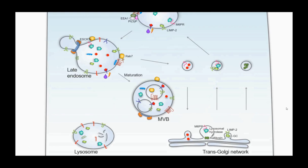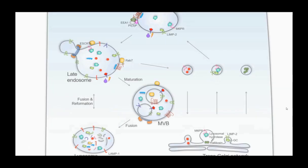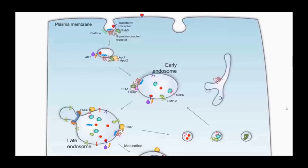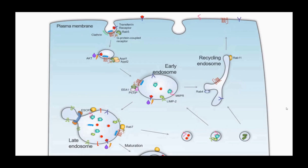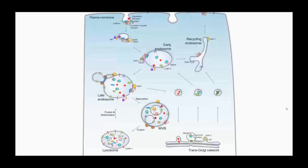Finally, we have the lysosome — the highly acidic compartment — which fuses with the late endosome or MVB for cargo delivery, where many proteins are degraded. We also have the recycling endosome, a critical organelle for recycling plasma membrane receptors back to the cell surface. It is defined by RAB4 for fast recycling and RAB11 for slow recycling. So there we have a relatively simplified model of the endosome-lysosome network and some of the critical proteins involved.